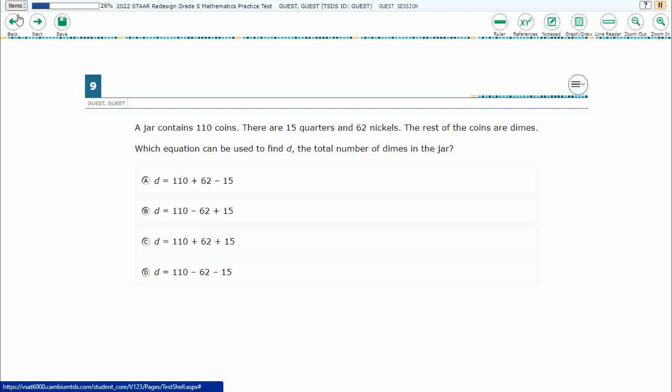So we have a jar that contains 110 coins: 15 quarters, 62 nickels, and the rest are dimes. We need to find d, the total number of dimes in the jar.